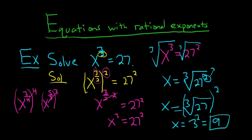Whenever you have an equation with rational exponents, just always focus on getting rid of the number on the bottom first. And then, you should be able to go from there. I hope that made sense.